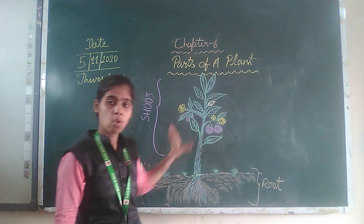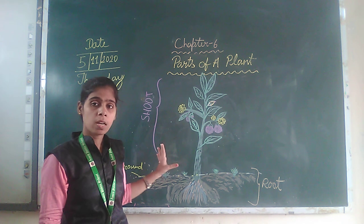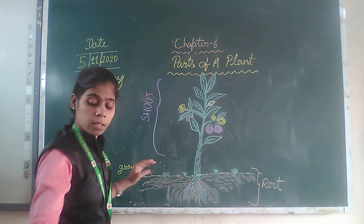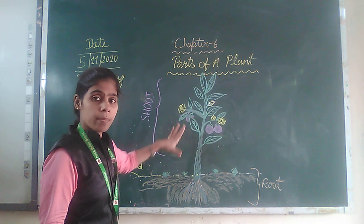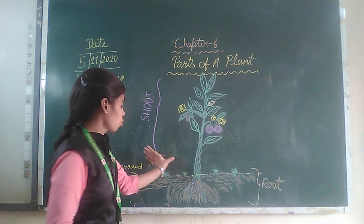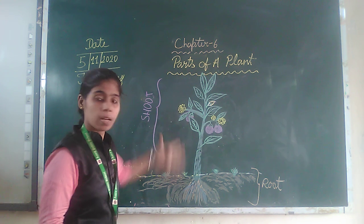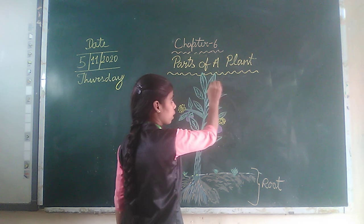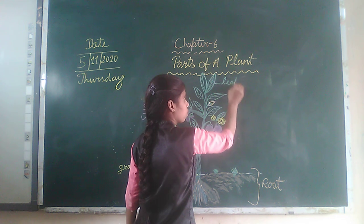So we have two main parts of the plant. Now we are identifying the parts of the plant one by one. Here we have many parts of the plant. If we look at this, this is the leaf.